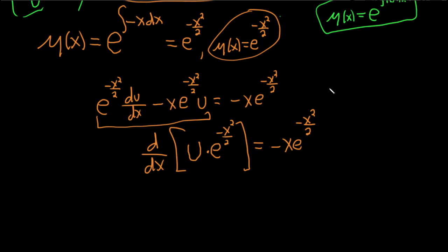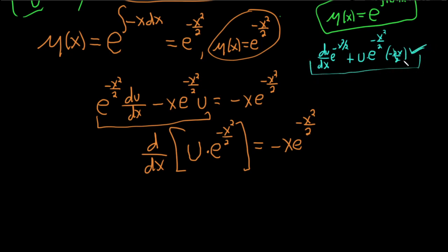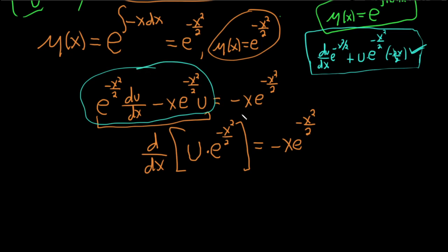Let's verify this with the product rule. The derivative of u times e to the negative x squared over 2 is: du/dx times e to the negative x squared over 2, plus u times the derivative of e to the negative x squared over 2, which by chain rule gives u times e to the negative x squared over 2 times negative x. This matches our equation, confirming everything is correct. Use the product rule as an easy way to check your answer.